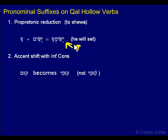This is kind of important to remember. So if you have pronominal suffixes, you'll lose that qamets which tells you that you have a hollow verb.